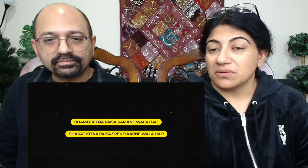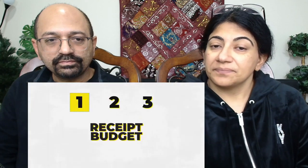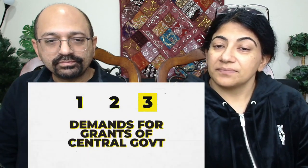The next part is the accounts section, where we look at all the taxes — are taxes being reduced or do we need to save on taxes? In Chapter 1, we asked two important questions: how much money is India going to earn, and how much is it going to spend? The accounts part answers these, and it impacts you and me because our taxes fund this. The budget accounts consist of three documents: Receipt Budget, Expenditure Budget, and Demands for Grants of the Central Government.